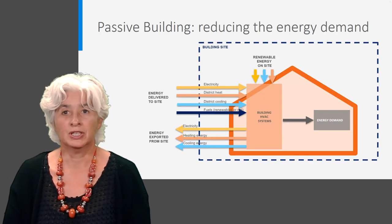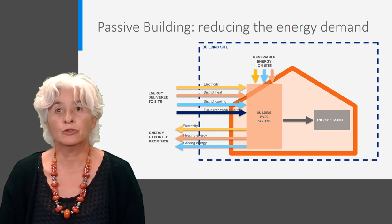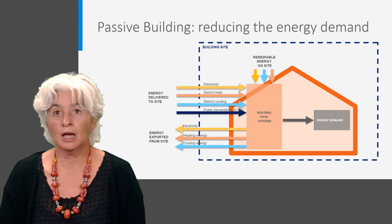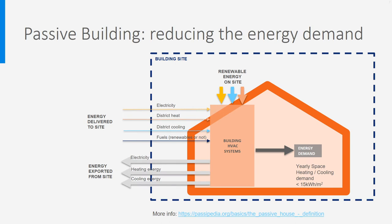Let's start with passive buildings. The main idea is to reduce energy demand as much as possible, thereby strongly reducing the energy delivered to the site. We speak of a passive building if the yearly energy demand for space heating is below 15 kWh per square meter, and the total energy demand — for space heating, appliances, hot tap water, etc. — should be below 60 kWh per square meter.